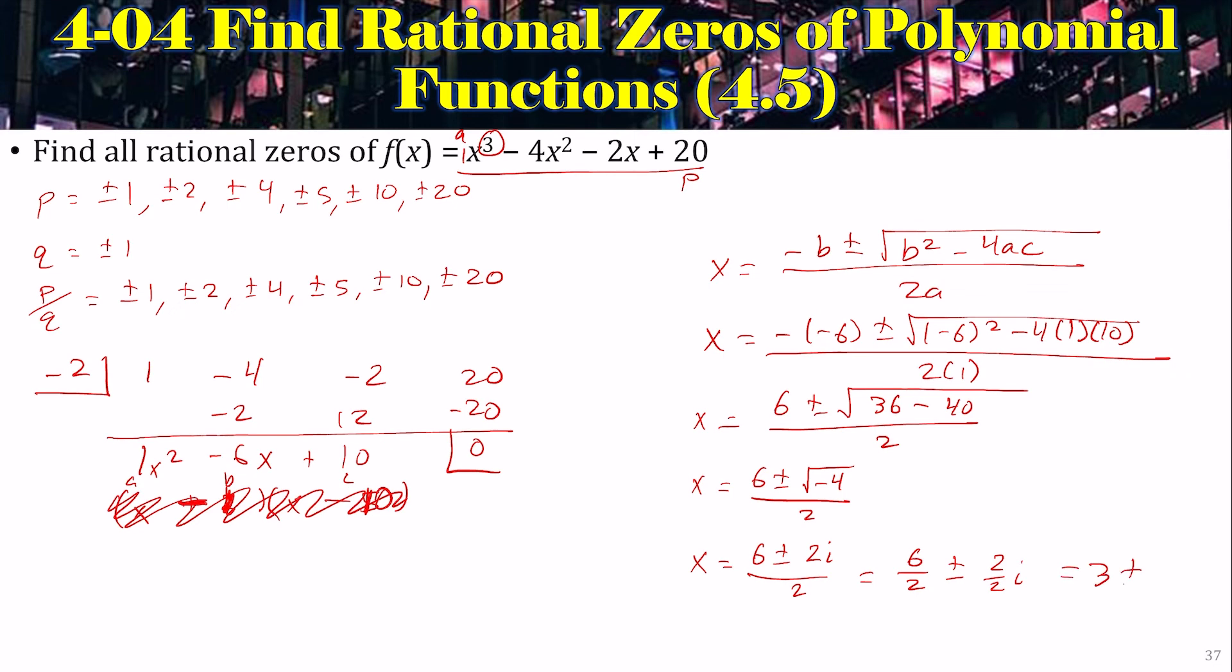So it is 3 plus and minus i. So what are the zeros? Well, it's the negative 2 that we started with, 3 plus i and 3 minus i. Yes, you need to have the imaginary zeros for the answers. Also, if you just looked at your graph, and you just found the x-intercepts, you would have only gotten the negative 2. That's why you have to do the synthetic division to get the imaginary zeros.